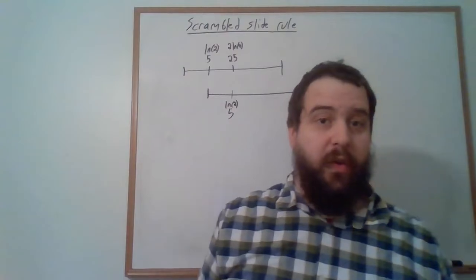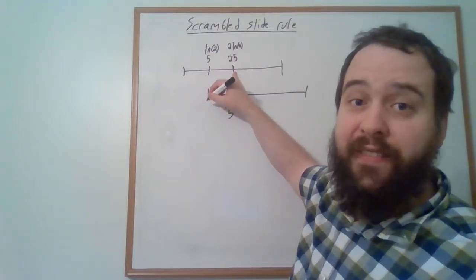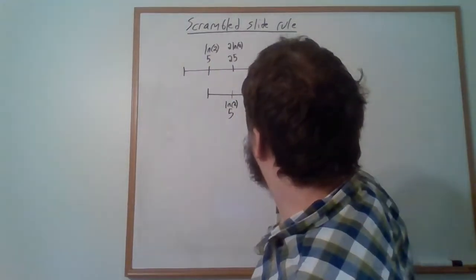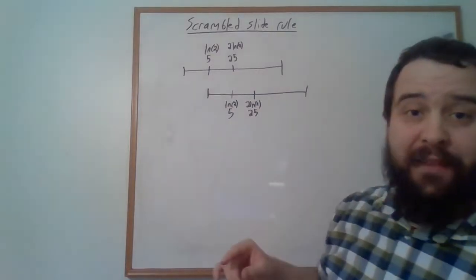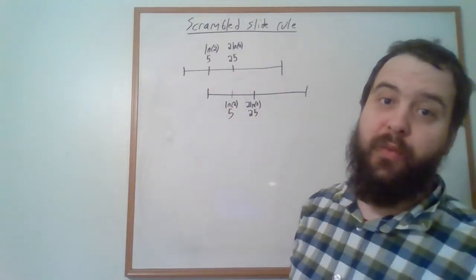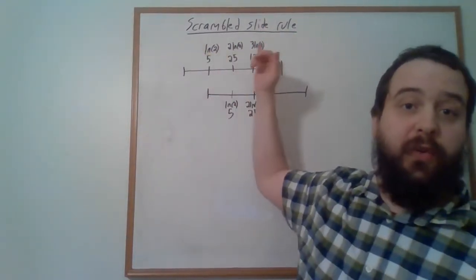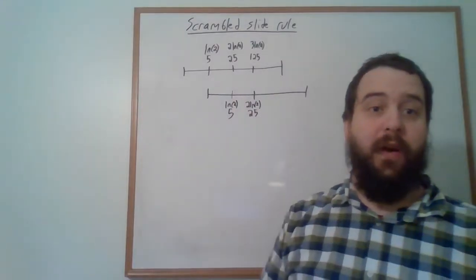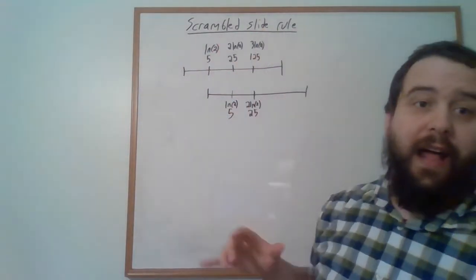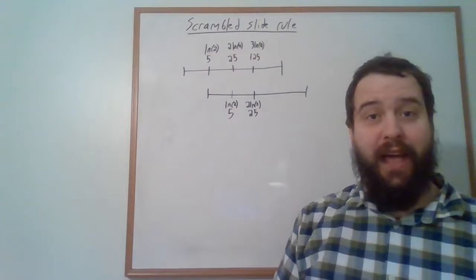2·ln(2) is, of course, the same as ln(4). And since we're writing 25 there, we also have to write 25 on the other slide rule as well. That means this 25 has to line up with 5 × 25 = 125. So at 3·ln(2) units down the original ruler, we write 125, and so on. Every multiple of ln(2) determines what number we write at that position.